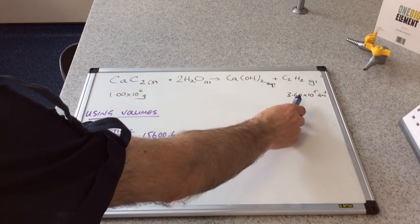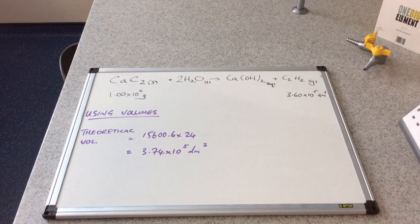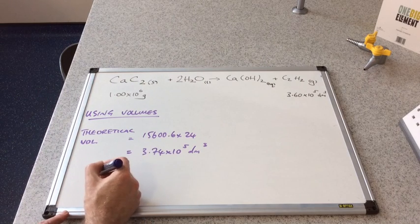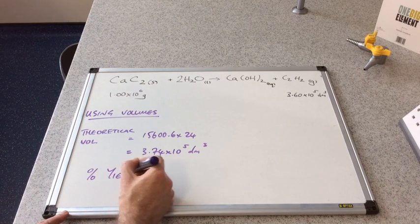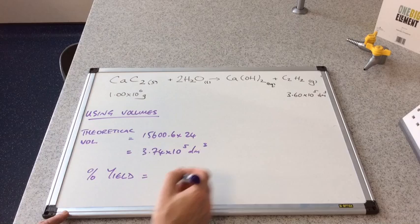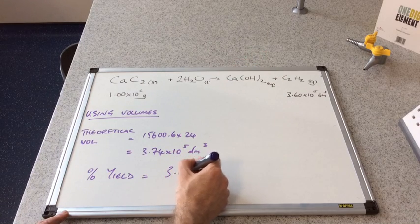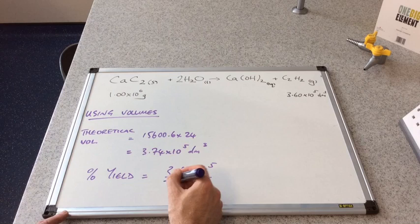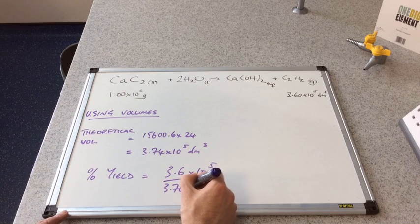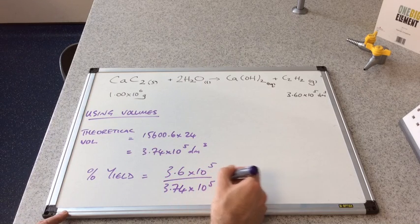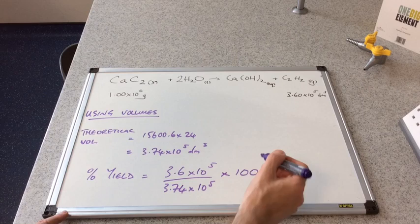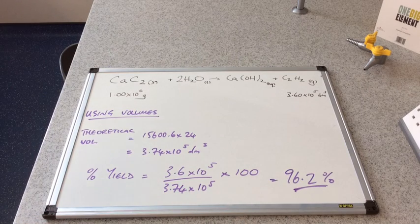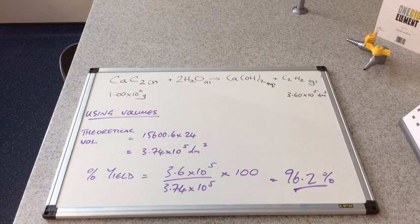Remember we already know the actual volume that was produced. So the percentage yield would be the actual 3.6 times 10 to the 5 over the theoretical 3.74 times 10 to the 5 times 100. And of course we get the same number as before, 96.2%.